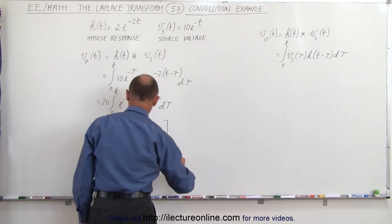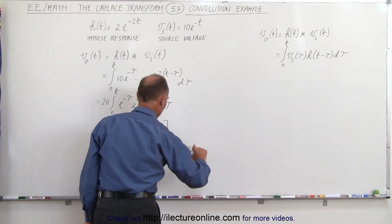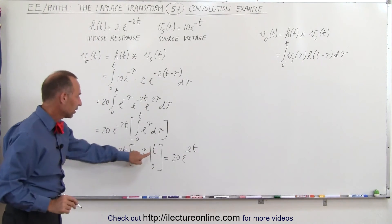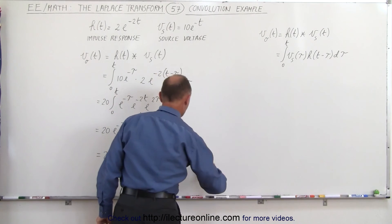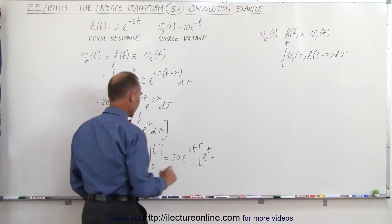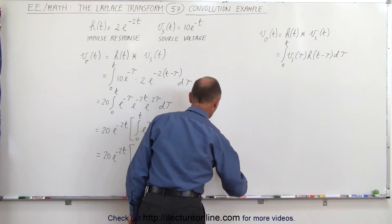Which means when you evaluate that, we get 20e to the minus 2t times, when we plug in the upper limit, we get e to the t, minus when we plug in the lower limit, we get e to the 0, which is equal to 1.